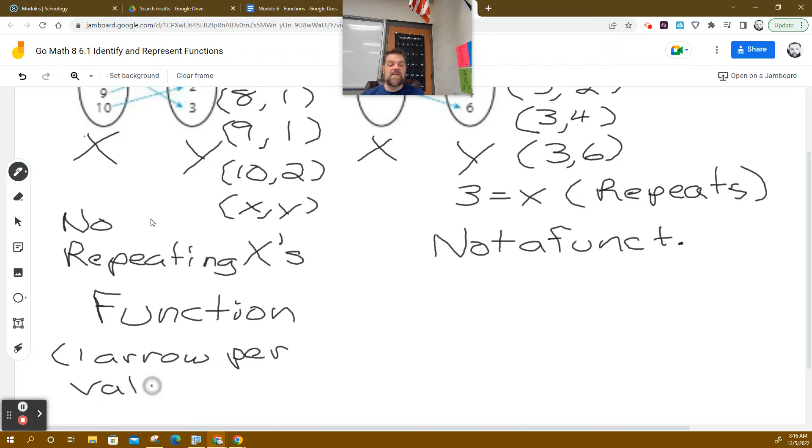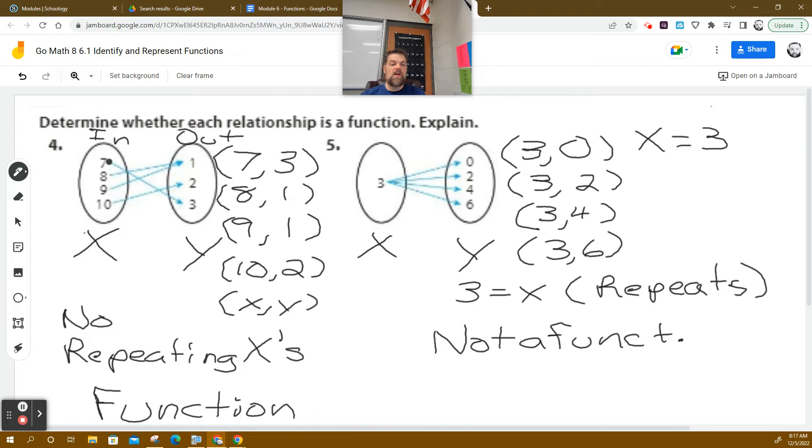So one arrow per X value. So when you look at the mapping, there's only one arrow leaving seven. Okay? When you look at eight, there's only one arrow leaving eight. When you look at nine, there's only one arrow leaving nine. Only one arrow leaving ten. So that is a function. For each input, there is one unique output.